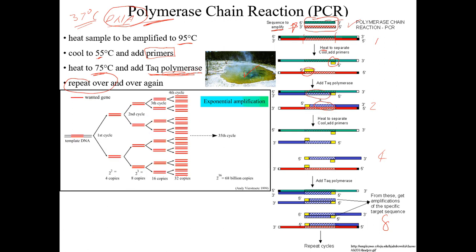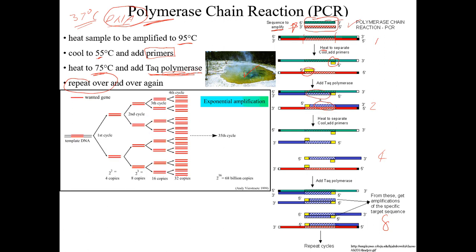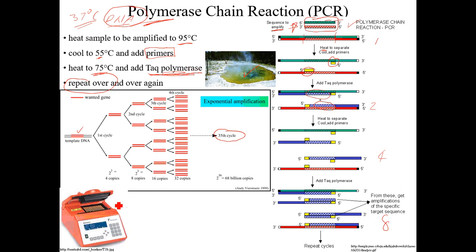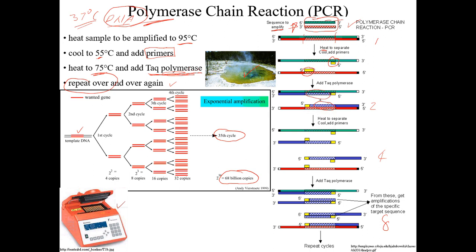After 35 cycles in a thermal cycler — a machine that automatically takes the DNA through all the heating and cooling steps — you end up with approximately 68 billion copies of that section of DNA. That is what the polymerase chain reaction accomplishes: exponential amplification of a specific DNA sequence.